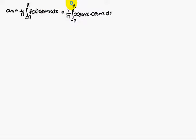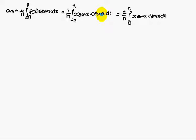Similarly, we compute an. an is equal to 1 by pi times the integral from minus pi to pi of f(x) cos(nx) dx. Now x sin x is an even function, and cos(nx) is also an even function. Even times even is even. So the entire integrand is an even function, and we can write it as 2 by pi times the integral from 0 to pi of x sin x cos(nx) dx.